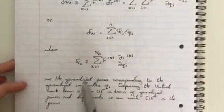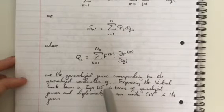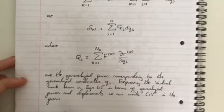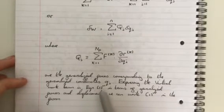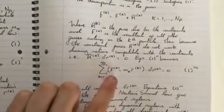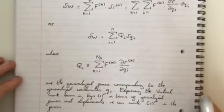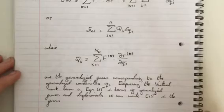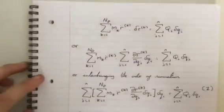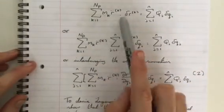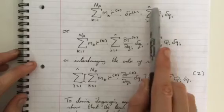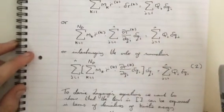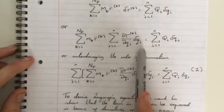So this is the generalized forces corresponding to the generalized coordinates Qj. So expressing the virtual work term in equation 1 triple dash, if you remember, triple dash was this one here, Newton's second law for our constraints. So expressing the virtual work term in that equation in terms of generalized forces and displacements, we can write the equation in the form we have here. We take the sum of a force dotted with delta Rk equal to the sum of Qj delta Qj, or we can substitute delta Rk for this.